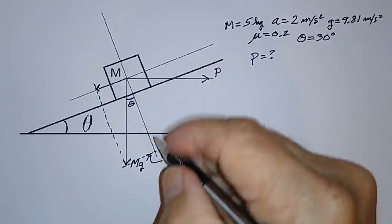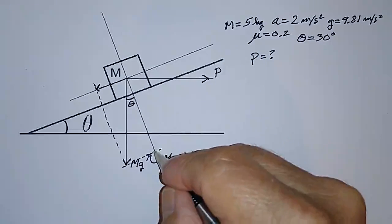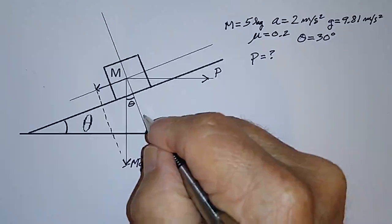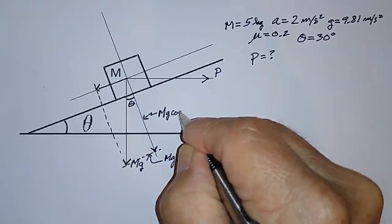And there's also a component of the force due to gravity that is perpendicular to the plane. And this component is just M times G times cosine theta.